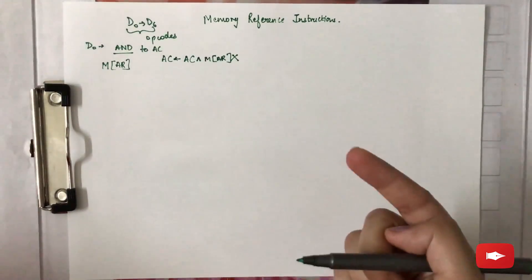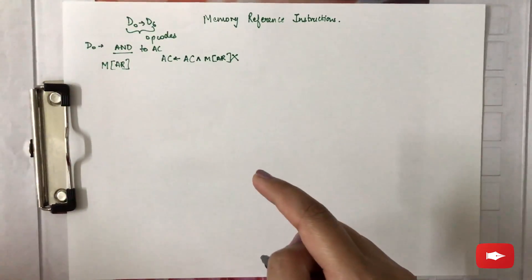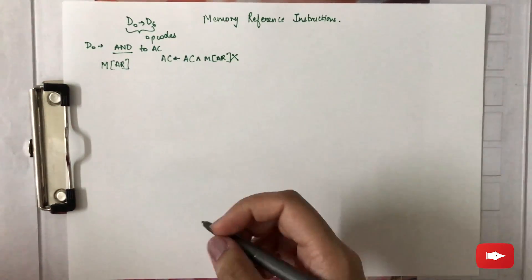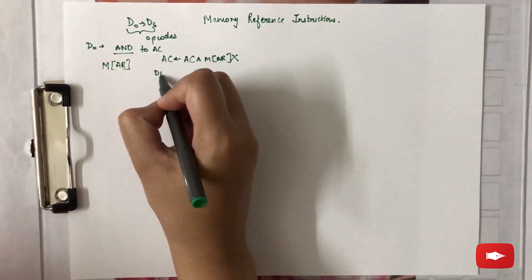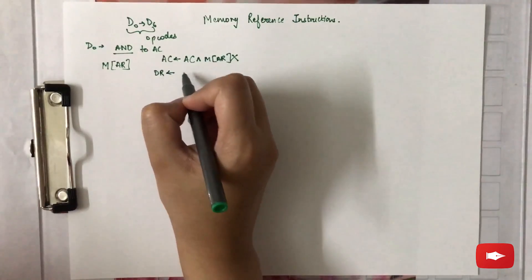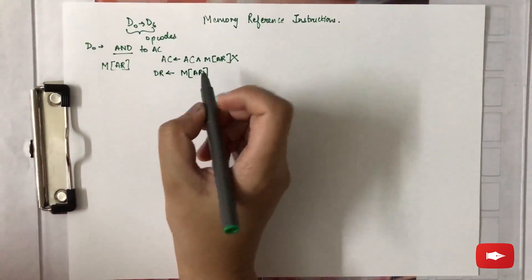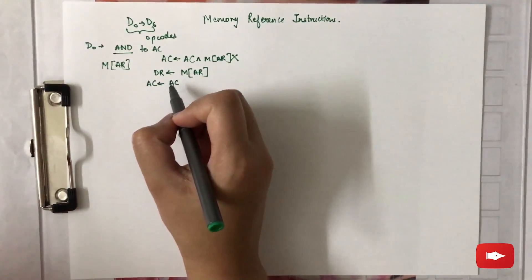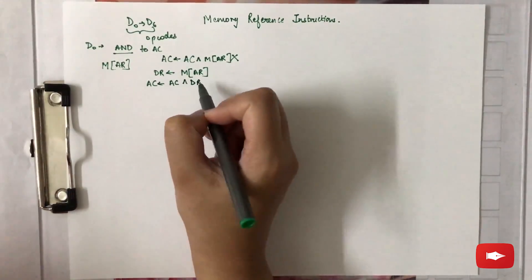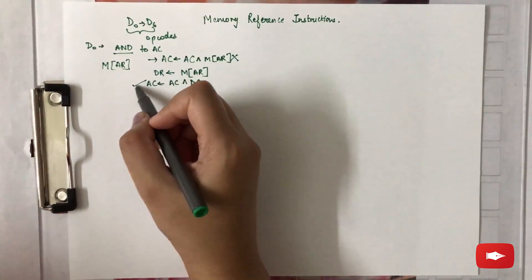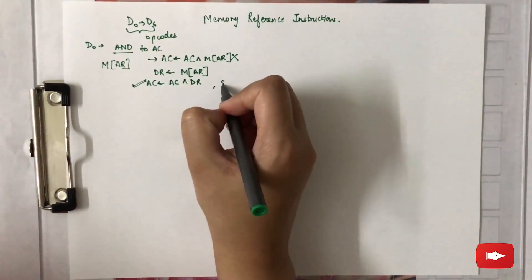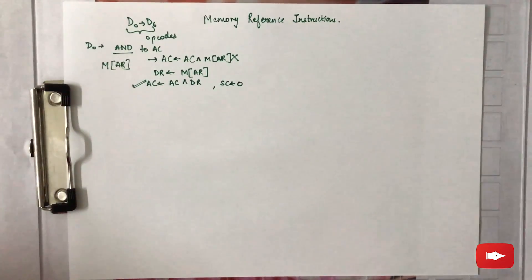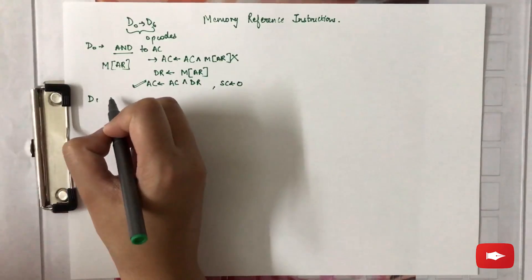There is no direct path from the bus into the accumulator, so the logic circuits receive information from the data register and then transfer. First, the contents at the effective address are stored in the data register DR. Then the AND operation is performed between the bits of the accumulator and that data register. Finally, the sequence counter is set to zero.